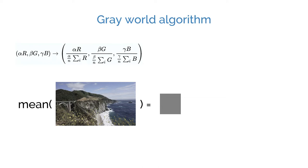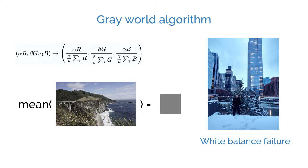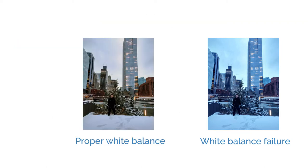The gray world algorithm is simple but far from perfect. It fails in many cases where the gray world assumption doesn't hold. Modern cameras use more advanced algorithms to handle these cases. These algorithms usually do a decent job although failures are sometimes inevitable.